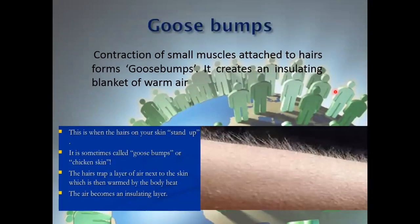Next is goosebumps. What are goosebumps? The contraction of small muscles attached to the hairs forms goosebumps. It creates an insulating blanket of warm air. Goosebumps are actually the hairs on your skin which rise up or stand up. The air trapped in between these hairs is warmed up by body heat, making the air an insulating layer.